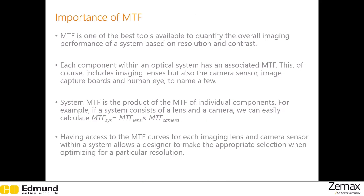An interesting thing to note is that every single component within an optical system has its own MTF, and the MTF of a system is calculated by taking the product of all individual components. For example, if a system has a lens and a camera, the system MTF is given by the product of the lens MTF and the camera MTF.